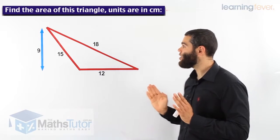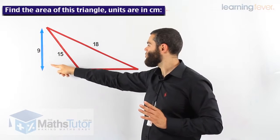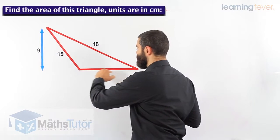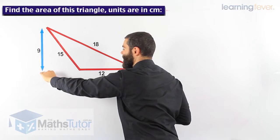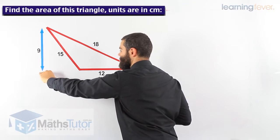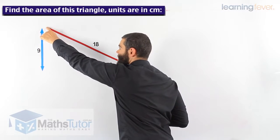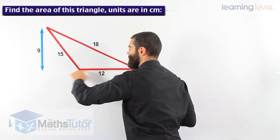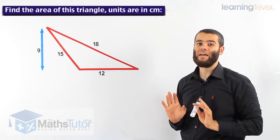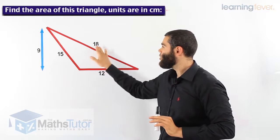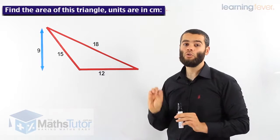Very important: where is the vertical height? There it is — it's the highest point of the triangle all the way to the base, and it meets the base at a right angle. So the vertical height goes from the highest point straight down to the base. Be careful: we don't use 15, nor do we use 18 — those are just the measurements for those sides. We don't use them at all.